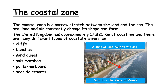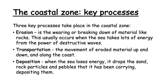There are many different types of coastal environment in the UK, and there are some examples listed on the screen: cliffs and beaches, sand dunes, salt marshes, ports or harbours, and also seaside resorts. You might be able to think of specific places relating to each type. For example, a local seaside resort on the coastal zone is Blackpool.